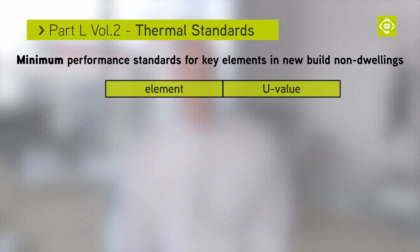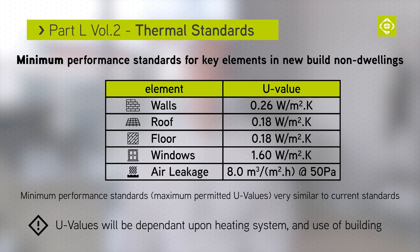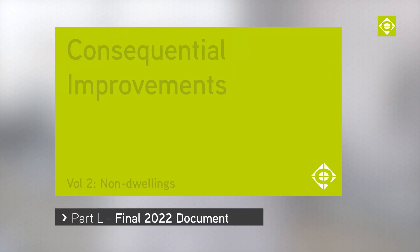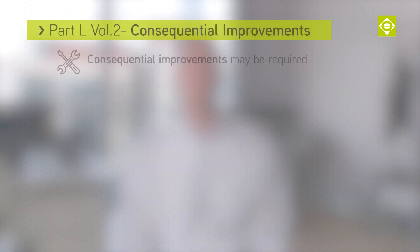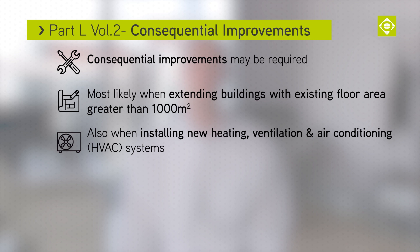Maximum permitted U-values for new build non-dwellings are shown on screen — these are very similar to the current standards. The U-values will be dependent upon the use of the building and the heating systems installed, and the same values apply to new thermal elements in non-domestic extensions. Consequential improvements might also be necessary, primarily when extending buildings with an existing floor area greater than 1000m², and when installing new HVAC systems for the first time or increasing the capacity of any existing HVAC systems within the building.